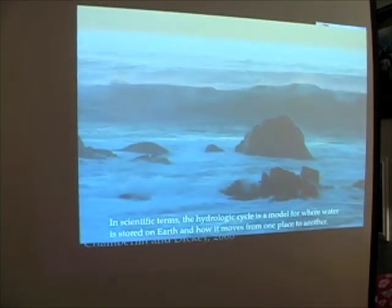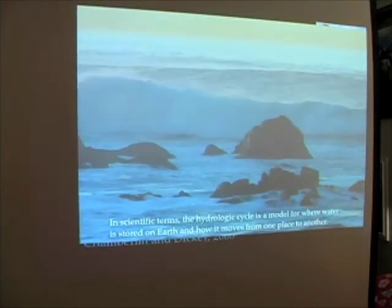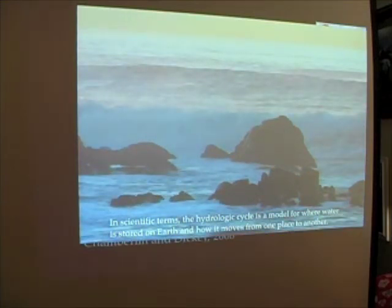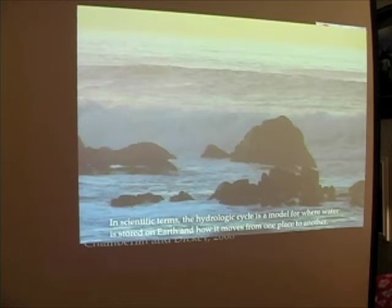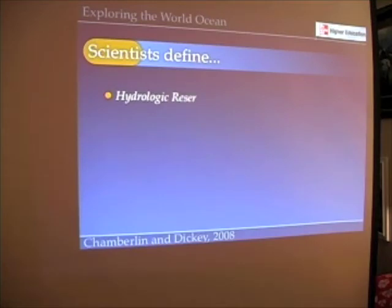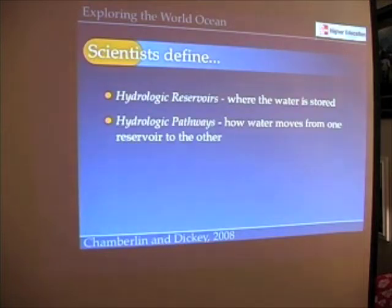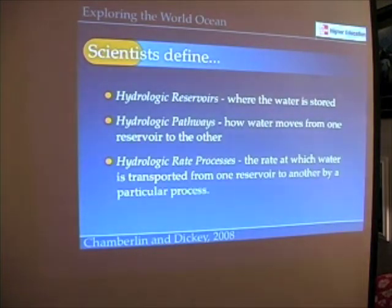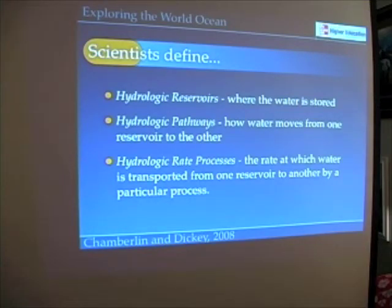In scientific terms, the hydrologic cycle is a model for where water is stored on Earth and how it moves from one place to another — a model for reservoirs such as the world ocean, lakes and rivers, ice caps, and the atmosphere. Scientists define hydrologic reservoirs where the water is stored, hydrologic pathways — how water moves from one reservoir to the next — and hydrologic rate processes, how fast water moves from one reservoir to another by some particular process.